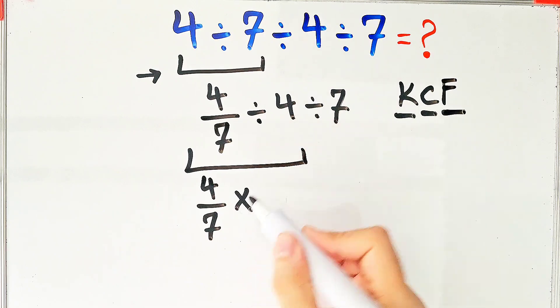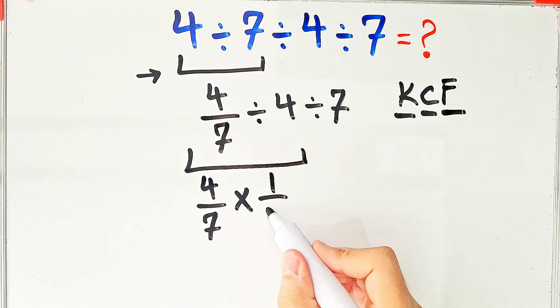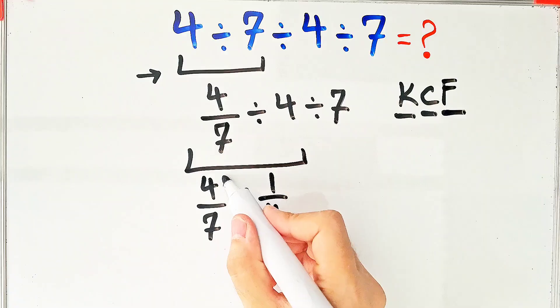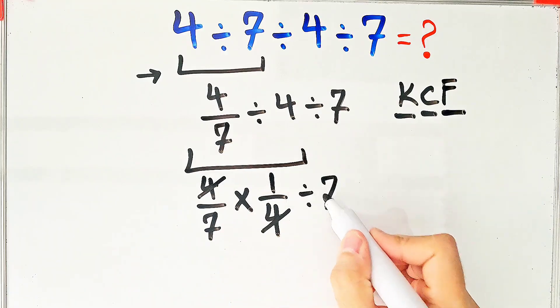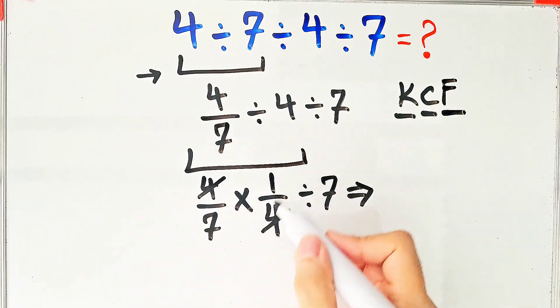We keep the first fraction as it is. After that, we change the division sign to the multiplication sign, and after that, we flip the second number.